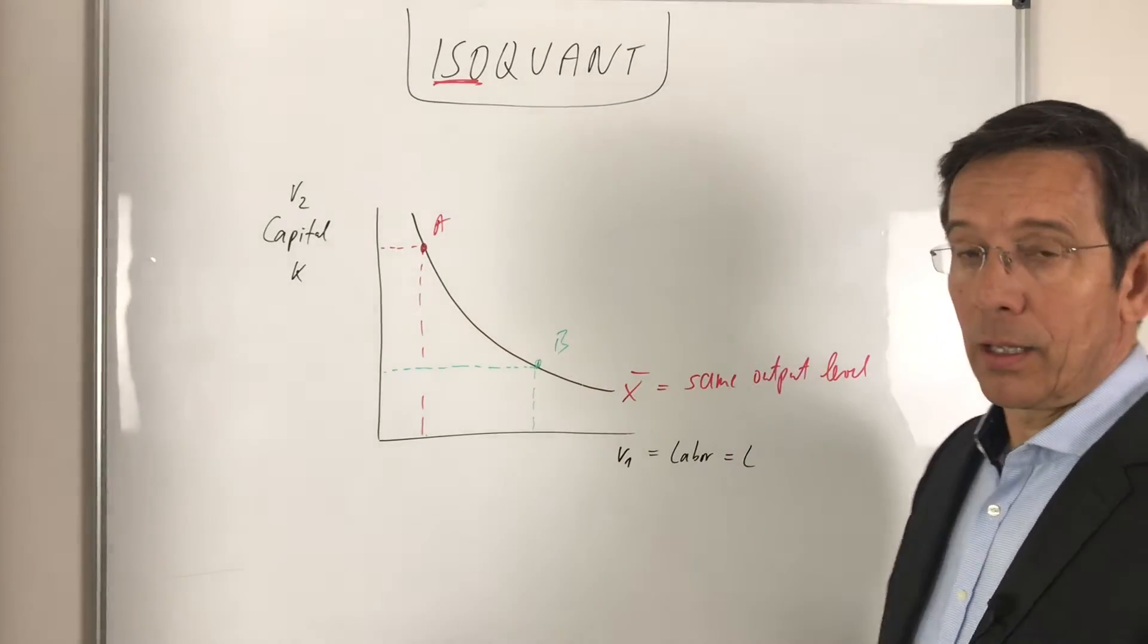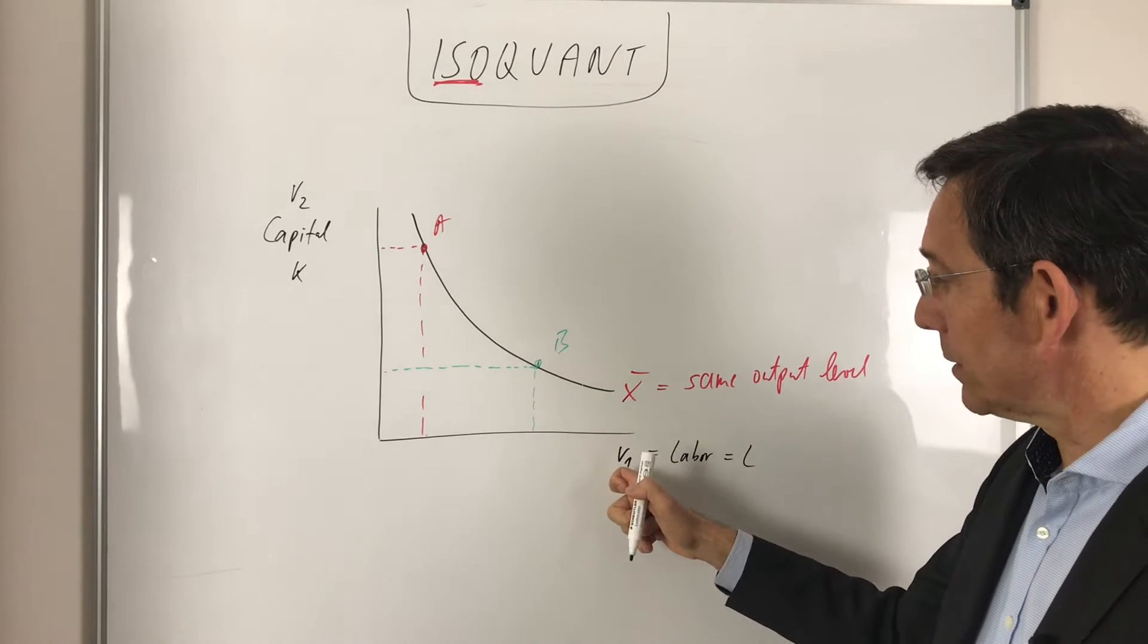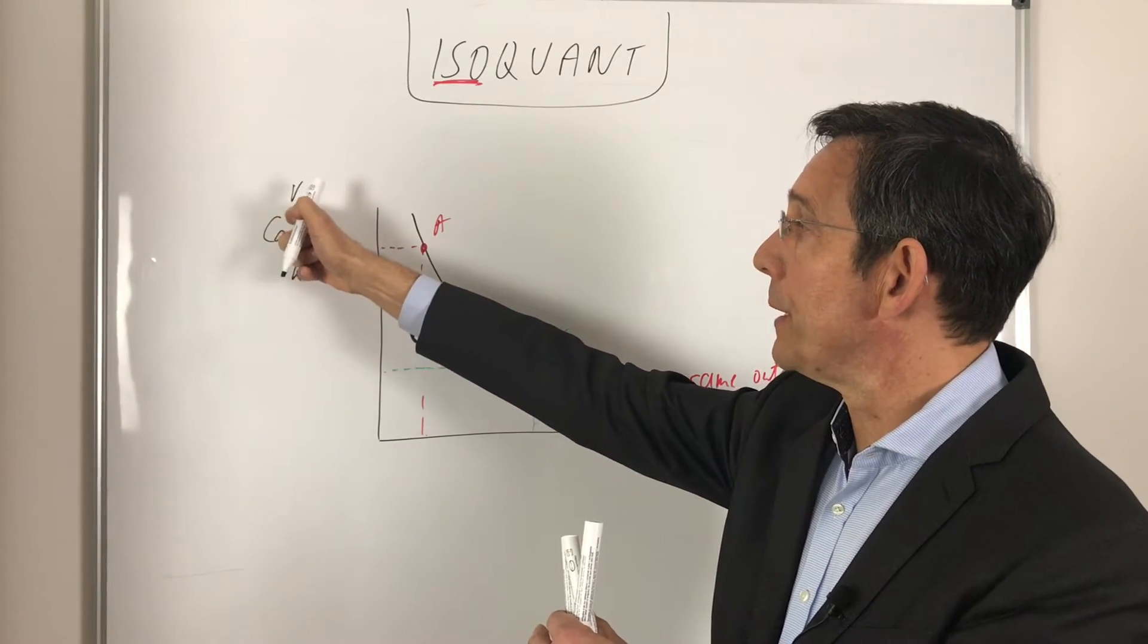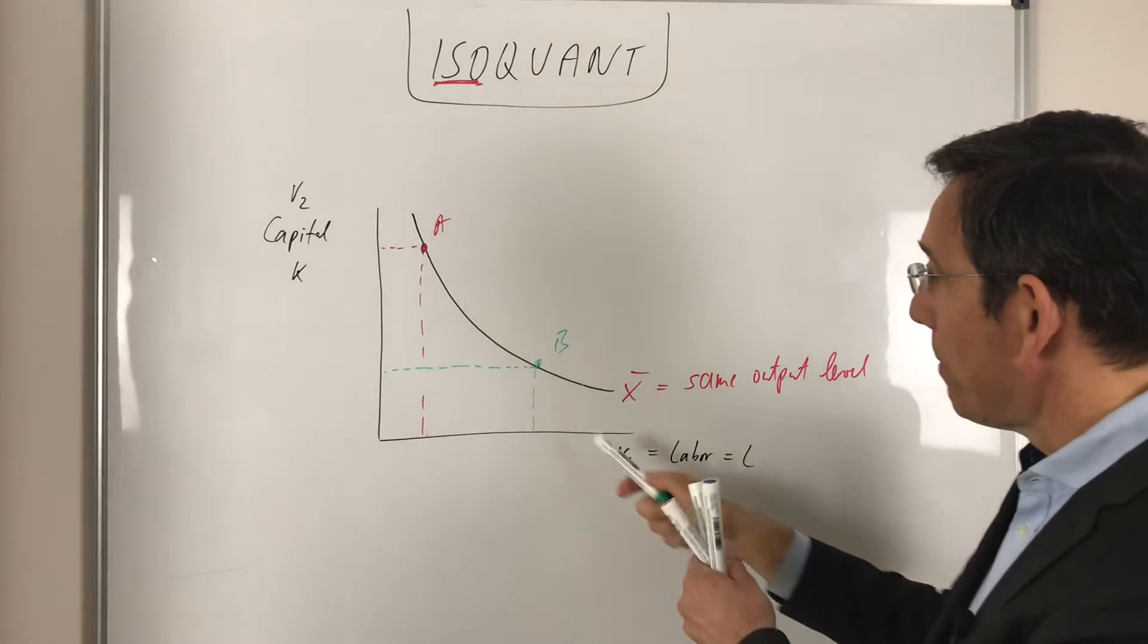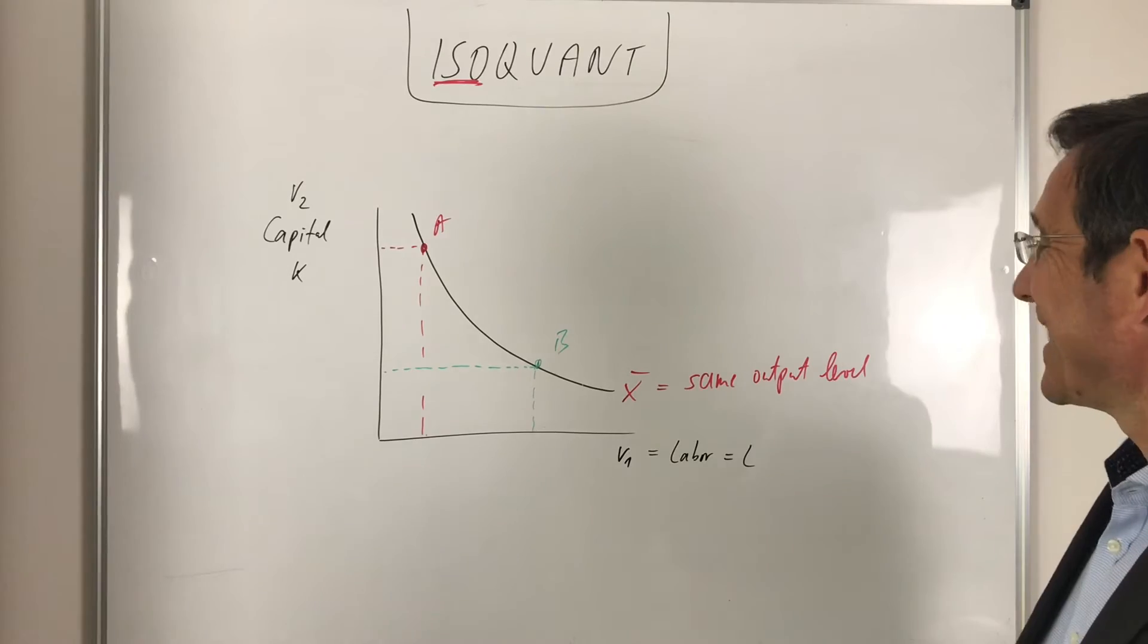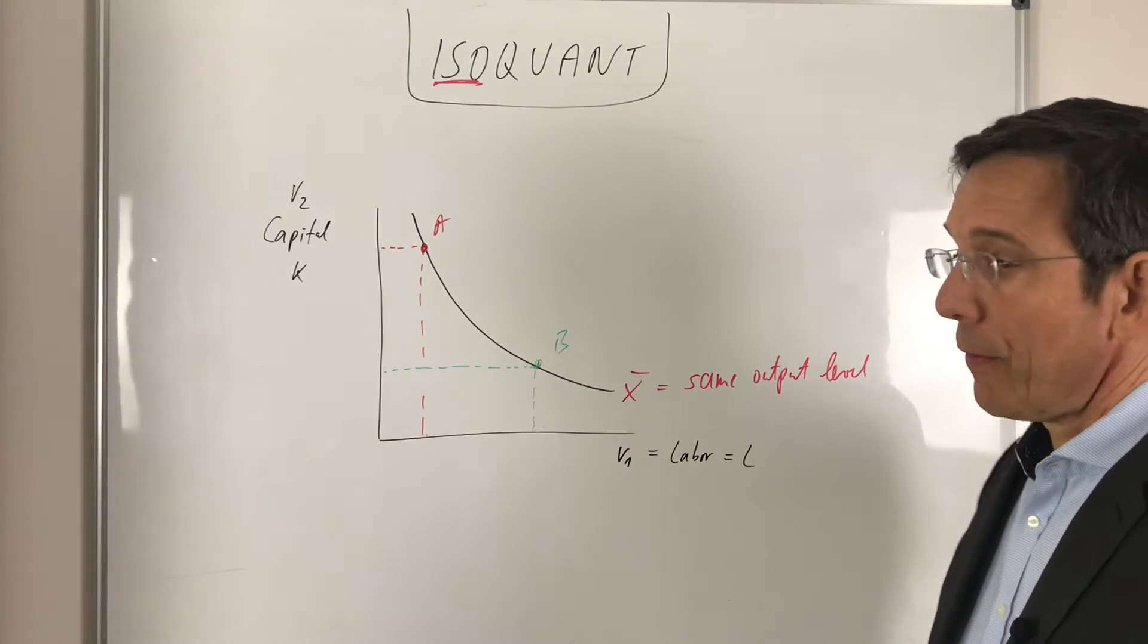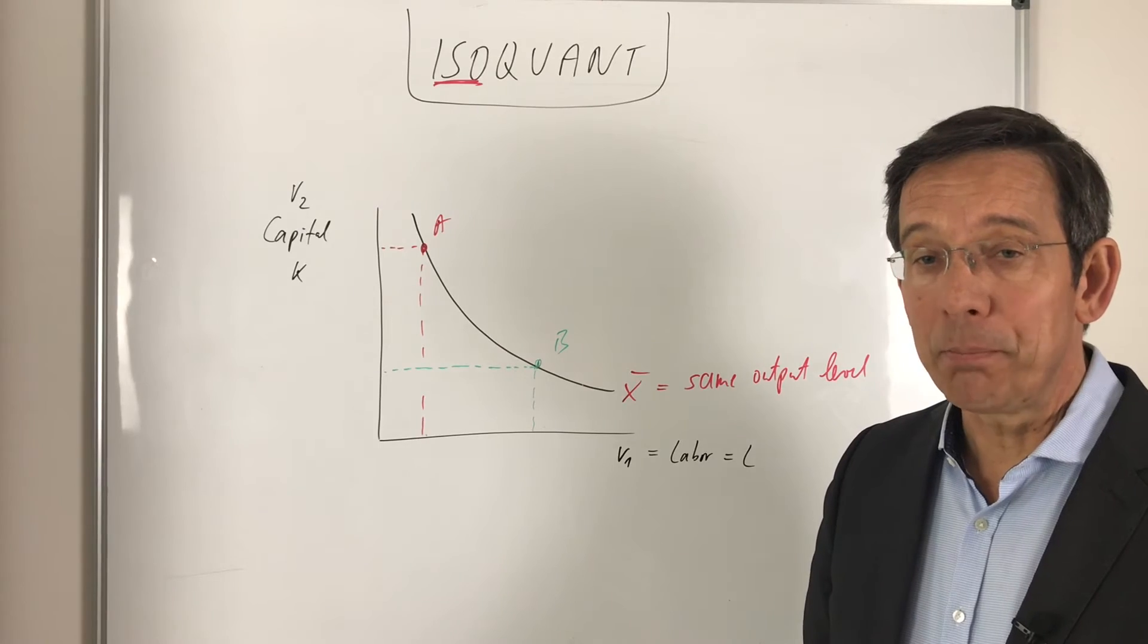So both combinations of input factors, input factor 1, v1, is labor and input factor 2, v2, is capital K, both combinations here yield the same output level. So the intuition of an isoquant is same output level and we're looking for different combinations of input factors.